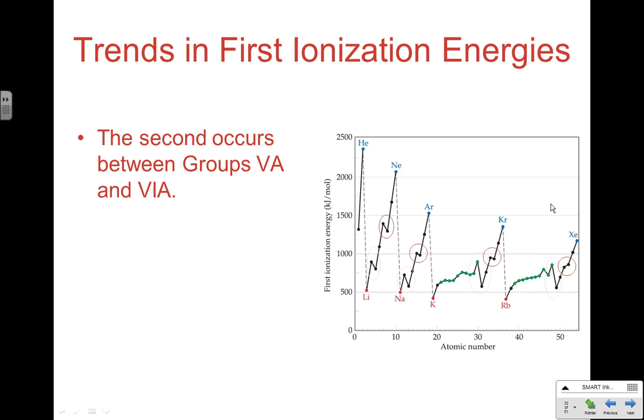That's the inconsistency between group 2 and group 3: we're removing a P versus an S electron. Those S electrons help shield the P electrons a little from the nucleus, making them for a brief period of time a little bit easier to remove.